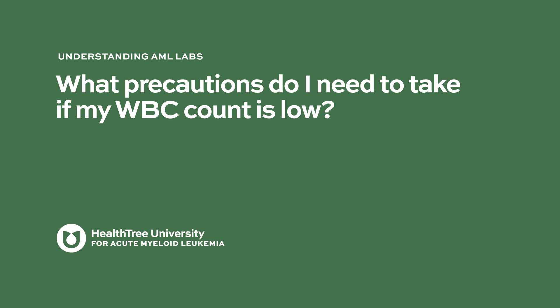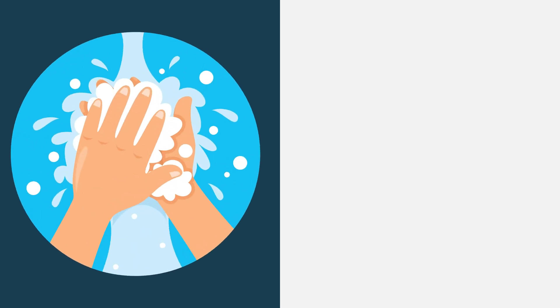What precautions do I need to take if my white blood cell count is low? You should take general precautions — you are at risk for infection, so going into big crowds you need to be especially mindful. You should take appropriate precautions: wash your hands, wear a mask if appropriate in a large crowd. The most important precaution is hand hygiene — washing your hands is one of the most effective ways of preventing infection. Stay away from very crowded public areas and people who are sick, sometimes including young children.